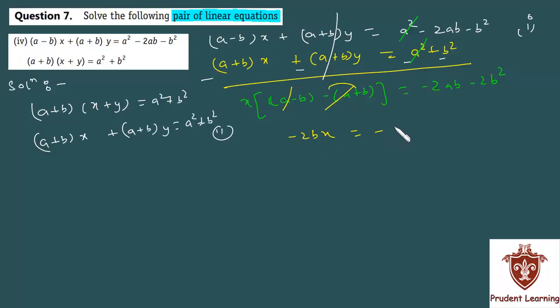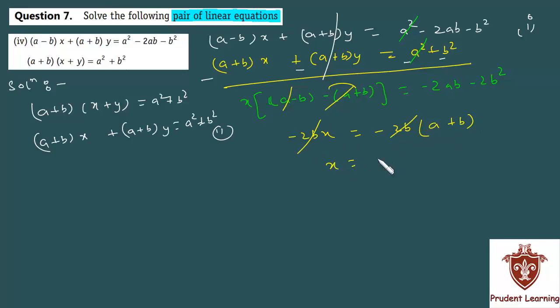Taking common factors — we can take minus 2b as common, and minus 2b cancels out, so we get x equal to a plus b.